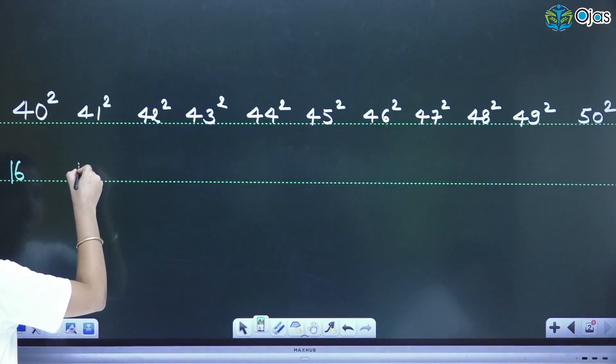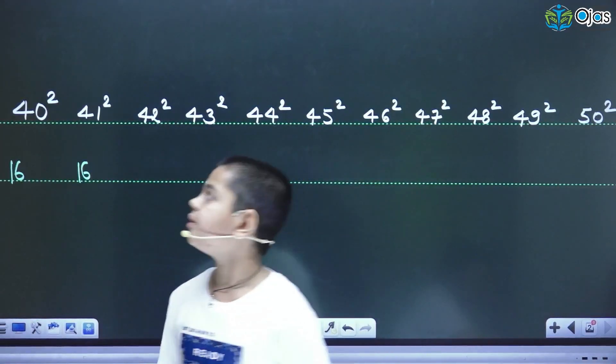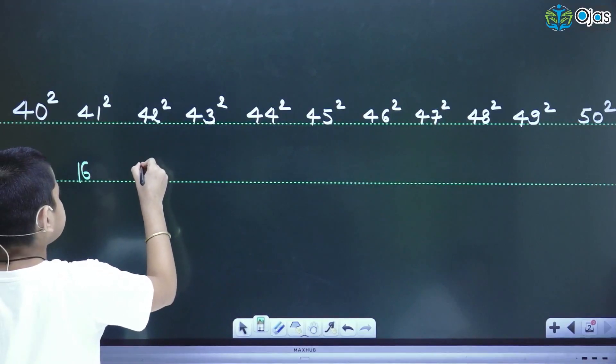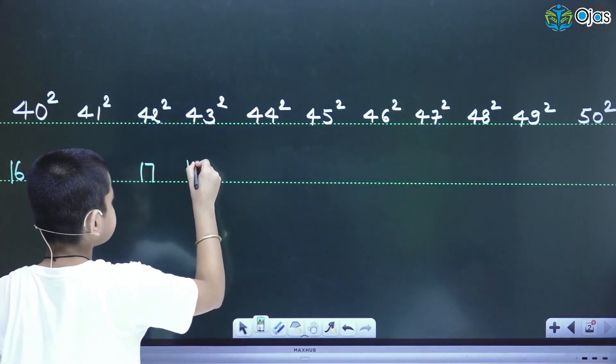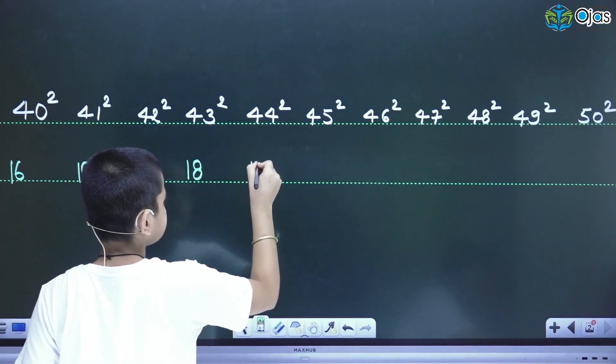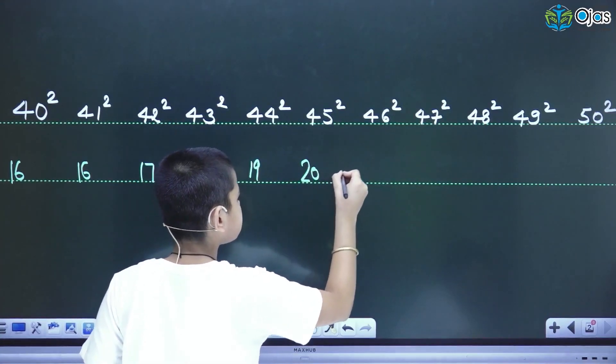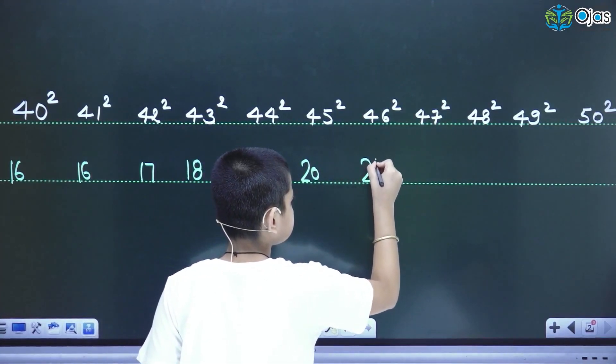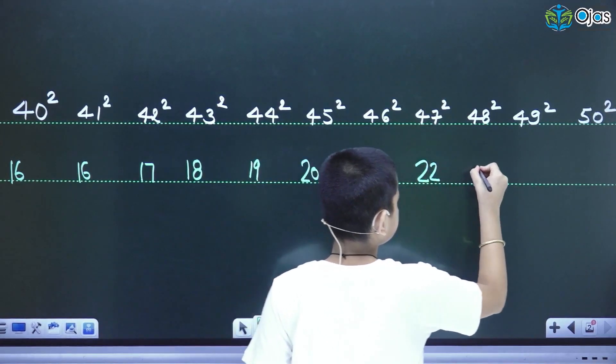Then again I am writing here 16 because 41 is near to the 40. Then we have to write the numbers after 16: then 17, then 18, then 19, 20, 21, 22, 23, 24, 25.